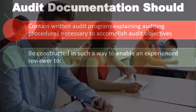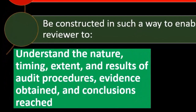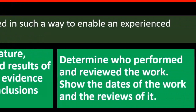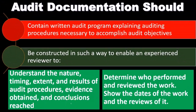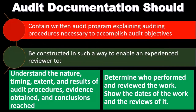The documentation must be constructed so that an experienced reviewer could understand the nature, timing, extent, and results of audit procedures, evidence obtained, and conclusions reached, and determine who performed and reviewed the work, and show the dates of the work and the reviews. The working papers should also indicate who did the procedures and who is in charge. CPA firms will often use initials or a signature process to identify the person who did the procedure and the person who reviewed it.